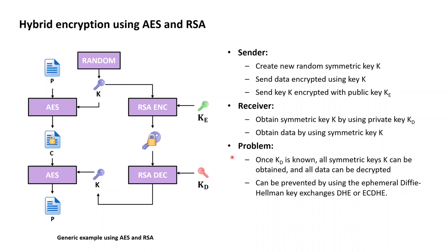This problem can be solved by using ephemeral Diffie-Hellman key exchanges, which make sure that the symmetric key K is never on the wire between Alice and Bob, neither in plaintext nor encrypted. Ephemeral Diffie-Hellman key exchanges are amazing, and how they really work will be explained in the next lesson. Stay tuned.